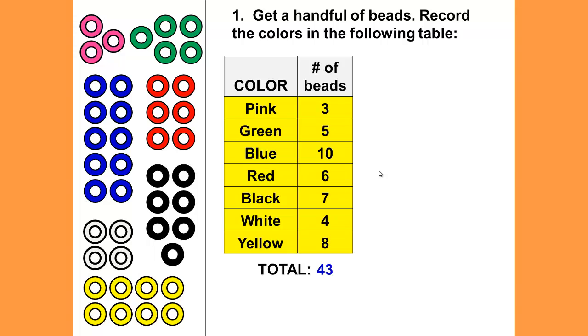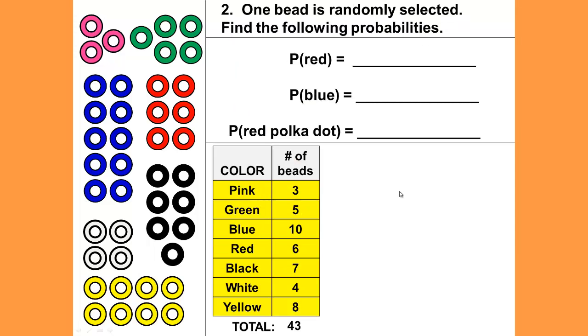If you're doing this at home, your sample space does not need to be this large but you don't want your sample space too small either. Then we're going to answer question number two: One bead is randomly selected. Find the probability of being red.